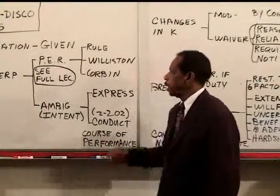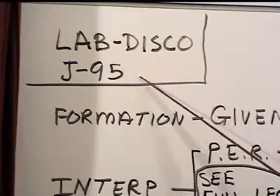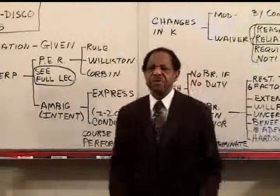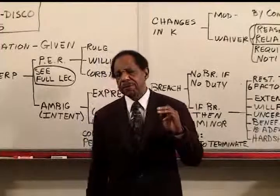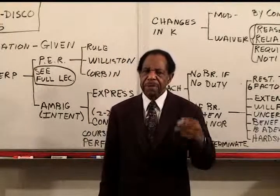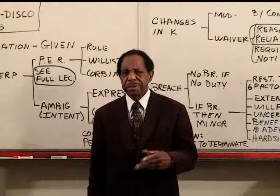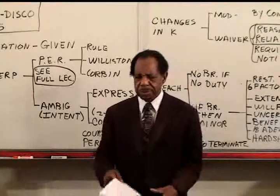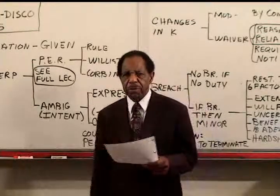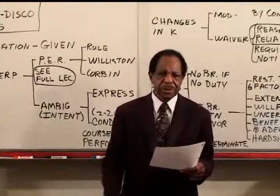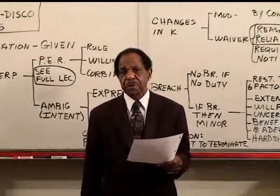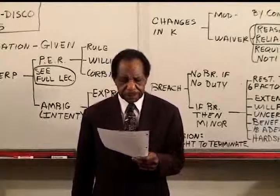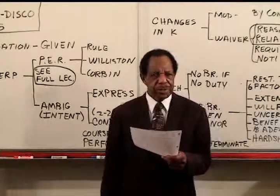This second lecture covers the question from the July 1995 California Bar Exam, the Lab/Disco question. I chose this to illustrate how the parol evidence rule and ambiguity are tested — they're almost always tested together. This is an excellent example. I'll go through the facts and discuss issues as they appear, though that's not necessarily how you'd write it.